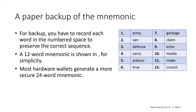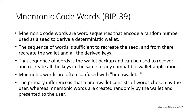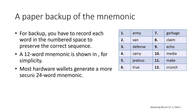Here's a look at a 12-word backup someone wrote down: 1. Army, 2. Van, 3. Defense, 4. Carry, 5. Jails, 6. True, 7. Garbage, 8. Claim, 9. Echo, 10. Media, 11. Making, 12. Crunch. It's important to have it in numerical order — the number next to each word removes any confusion about ordering. It doesn't have to be 12 words; it can be 24 words depending on the wallet. In theory 24 words is more secure, but the difference is marginal.